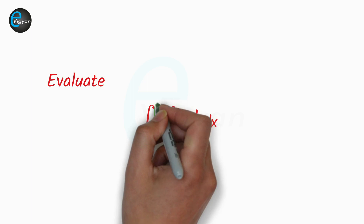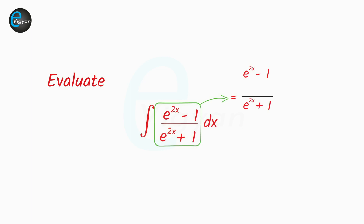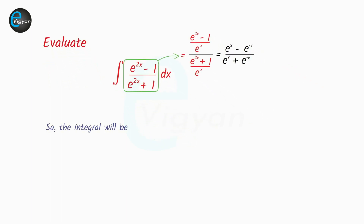Here the integrand is e raised to the power 2x minus 1 upon e raised to the power 2x plus 1. After dividing the numerator and denominator by e raised to the power x, the integrand becomes e raised to the power x minus e raised to the power minus x upon e raised to the power x plus e raised to the power minus x. So the integral will be i equal to integration of e raised to the power x minus e raised to the power minus x upon e raised to the power x plus e raised to the power minus x dx.